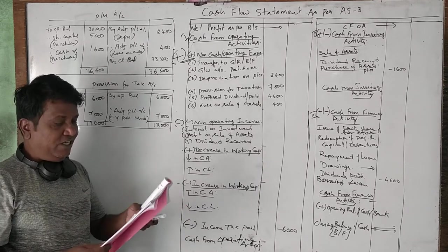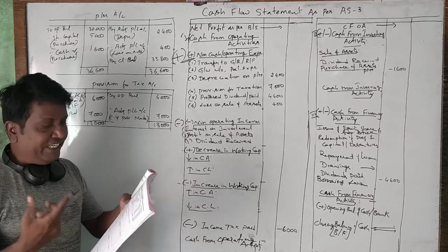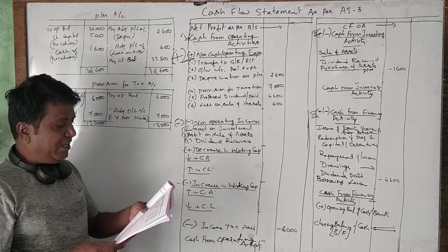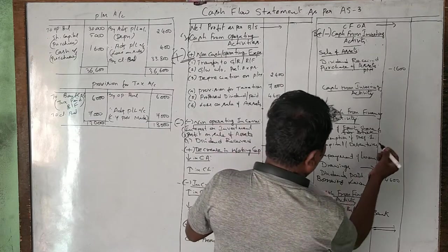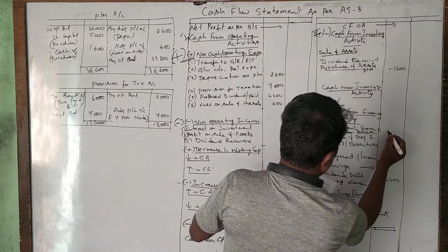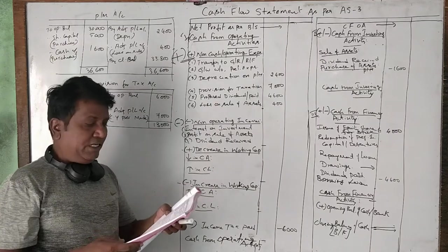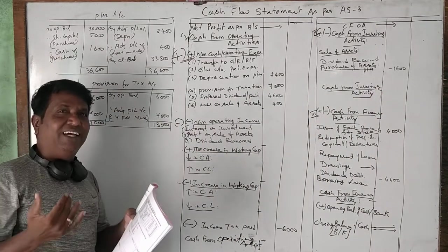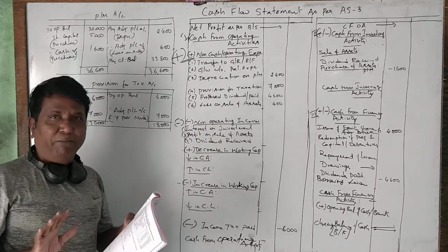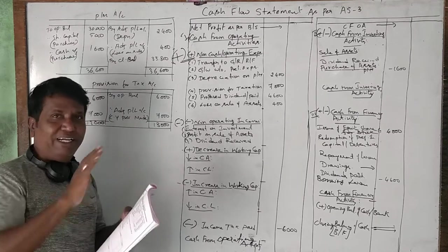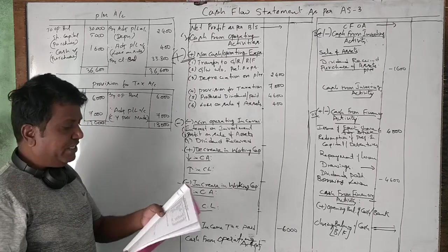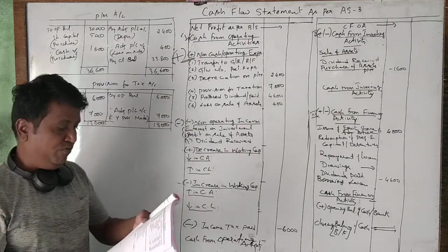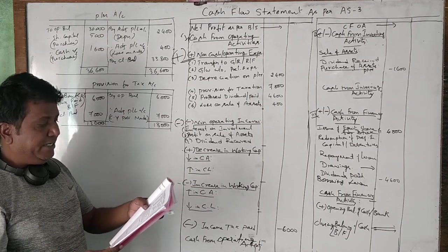We have done all the adjustments except goodwill purchased by issue of shares, which is already adjusted in the balance sheet. There was no goodwill, but there is a purchase of goodwill. Goodwill purchased by issue of share capital need not be shown separately in the cash flow statement because it is already taken in equity share capital and also in the balance sheet — one liability increased and one asset increased, so it is already adjusted.